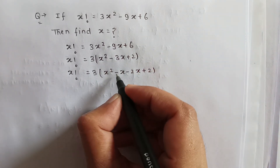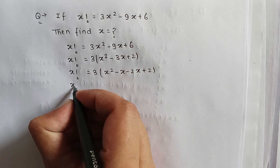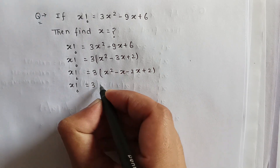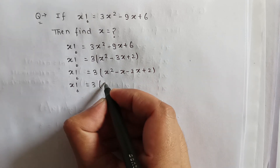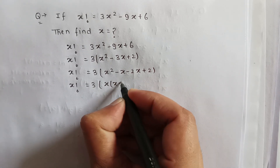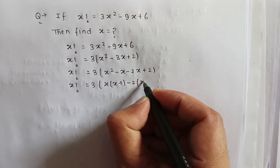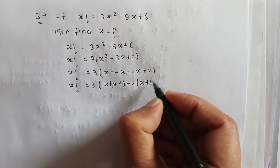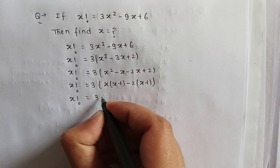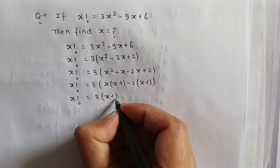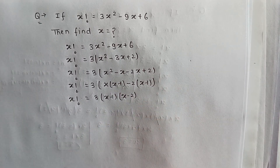So x factorial is equal to 3 multiplied by — if we take x common it will be x minus 1, and if we take minus 2 common it will also give x minus 1. Therefore x factorial is equal to 3 multiplied by (x minus 1) multiplied by (x minus 2).